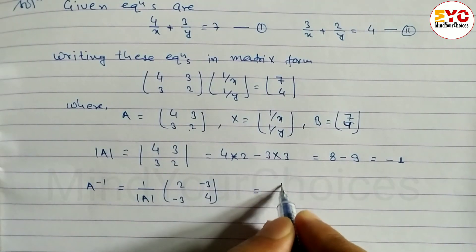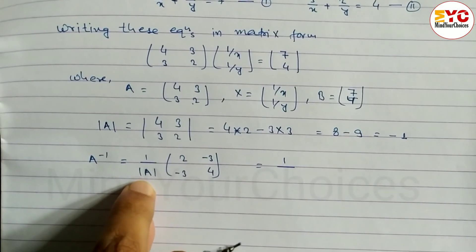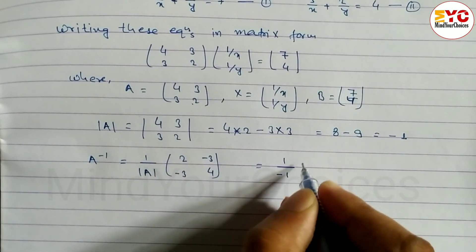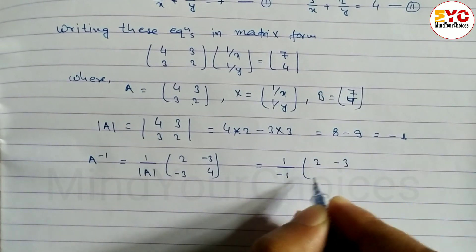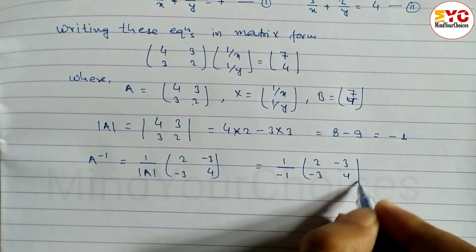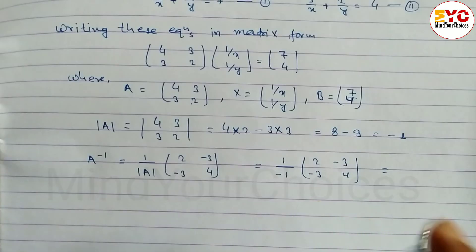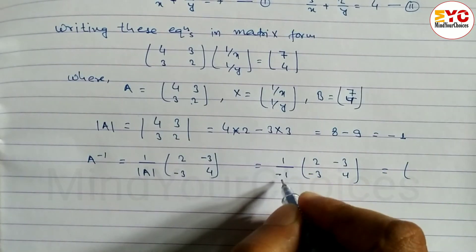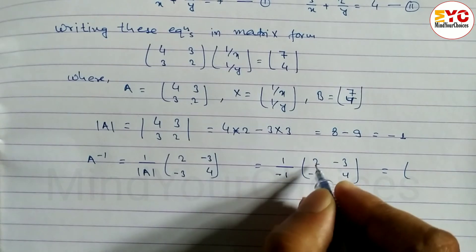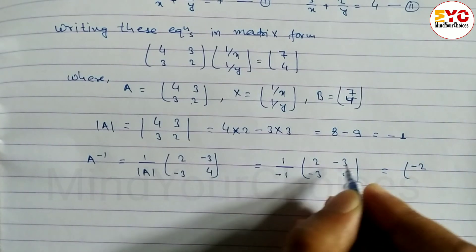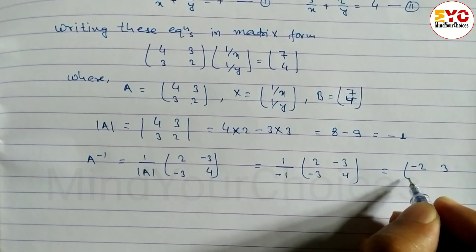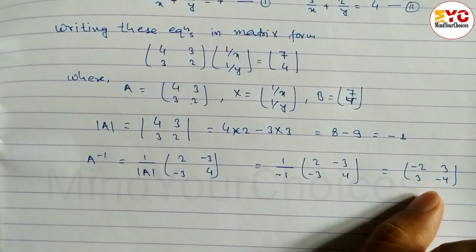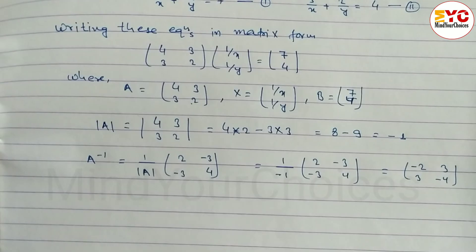So A⁻¹ = (1/−1) × [[2, −3], [−3, 4]]. When we multiply, we get: 1/−1 = −1, so −1 × 2 = −2, −1 × (−3) = 3, −1 × (−3) = 3, and −1 × 4 = −4. Therefore A⁻¹ = [[−2, 3], [3, −4]]. If negative it becomes positive, if positive it becomes negative.